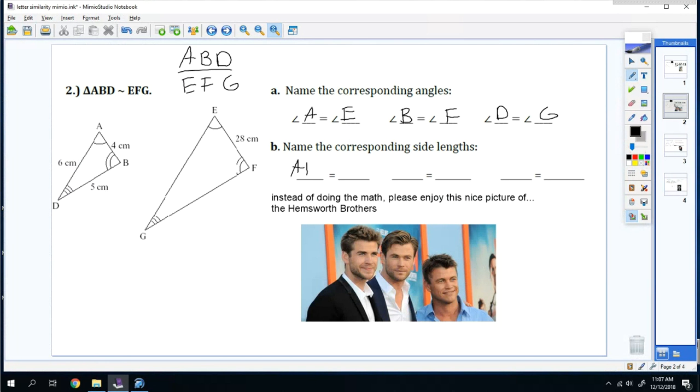So side length AB corresponds to EF. And side length BD corresponds to FG. And then AD corresponds to EG. And you can skip C and D on number two. So let's go to number three.